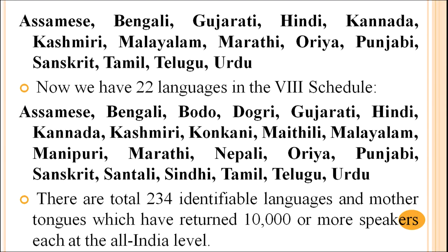In 1951, the 8th Schedule had 14 languages, included to facilitate the official business of the government, especially correspondence between states and the center. Those 14 languages were Assamese, Bengali, Gujarati, Hindi, Kannada, Kashmiri, Malayalam, Marathi, Odia, Punjabi, Sanskrit, Tamil, Telugu, and Urdu.